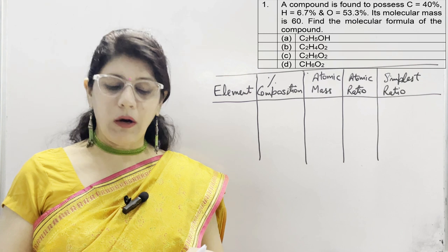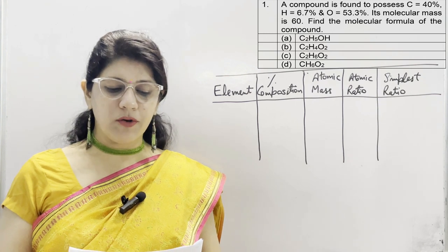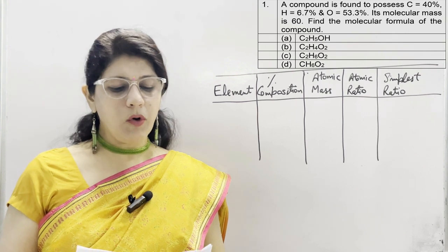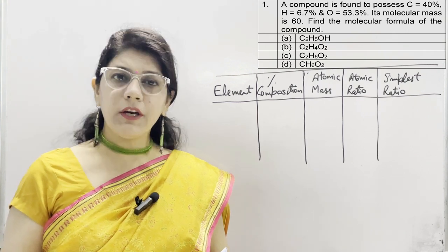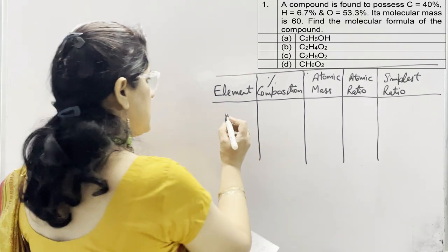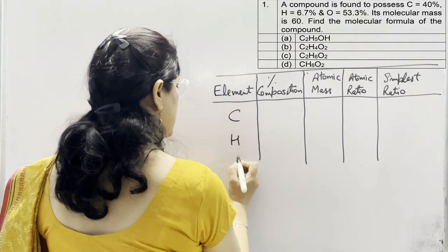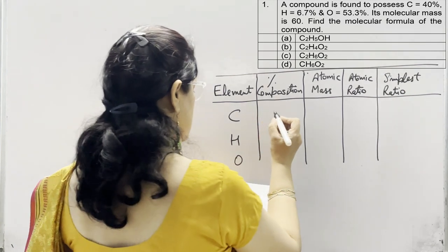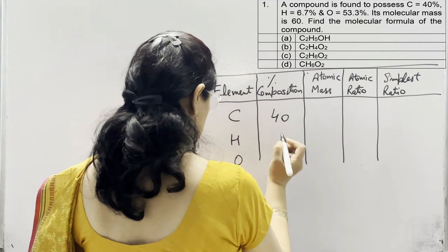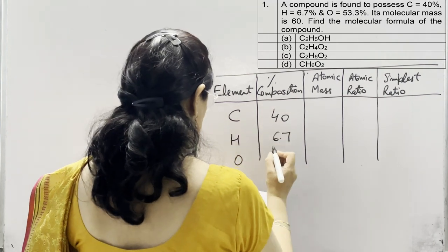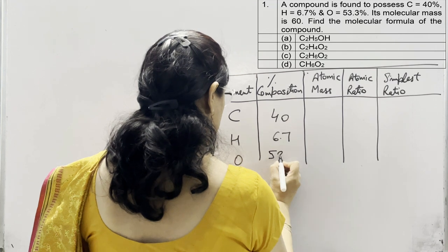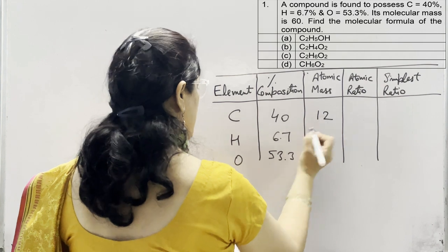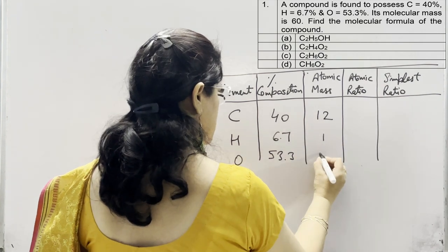Coming to the first MCQ: a compound is found to possess carbon, hydrogen, and oxygen. Their percentages are given. Its molecular mass is 60. Find the molecular formula of the compound. We need to draw a table here. Three elements are given: carbon, hydrogen, and oxygen — so an organic compound is given. The percentage composition is carbon 40%, hydrogen 6.7%, and oxygen 53.3%. The atomic masses are: carbon 12, hydrogen 1, and oxygen 16.